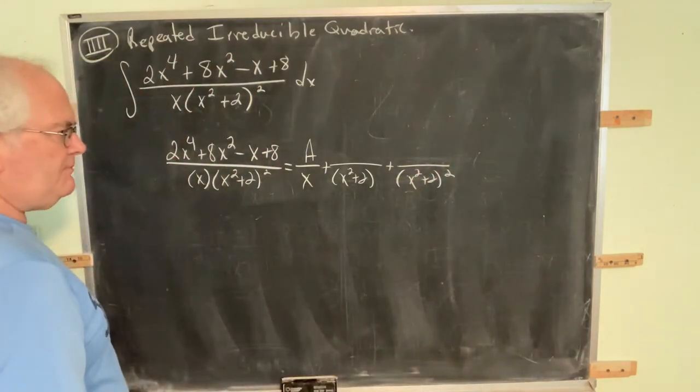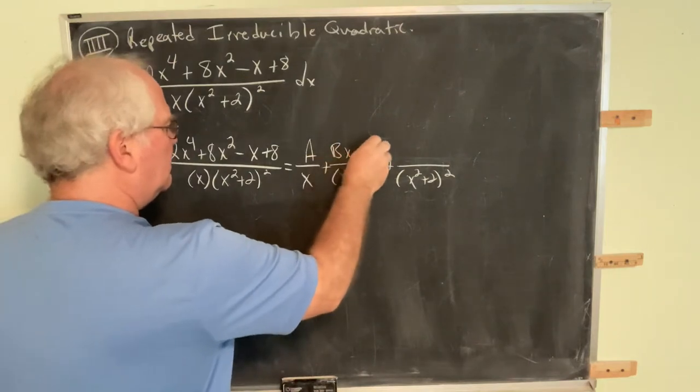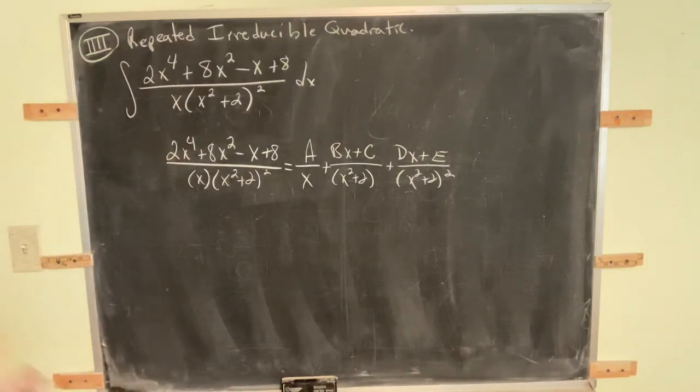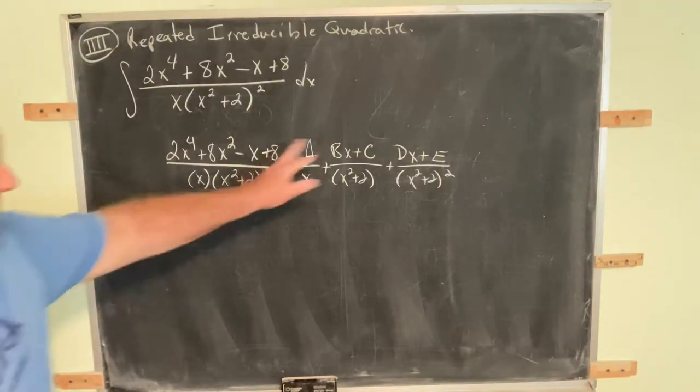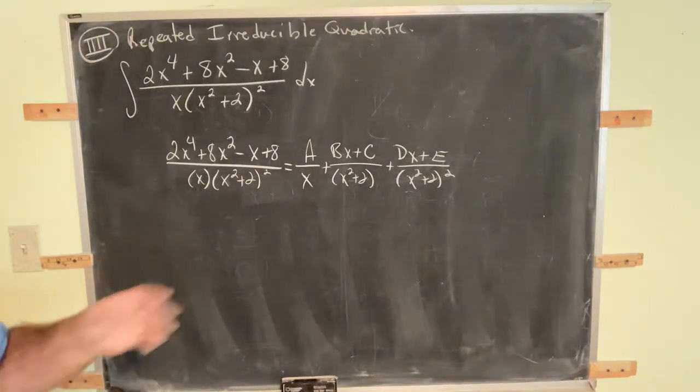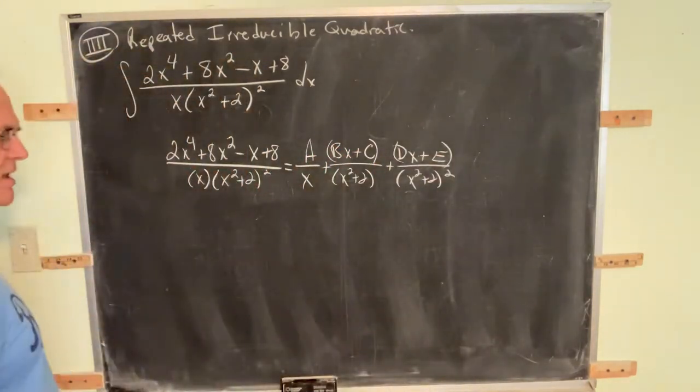And since this is quadratic, those need to be potentially linear. Now, it could work out that one or more of these could work out to be 0, which makes the rest of the problem much easier. But we don't know that going in, so we need to account for the possibilities here.